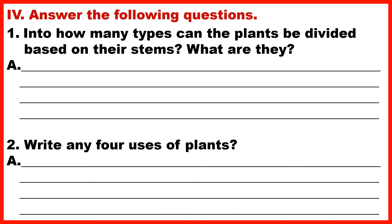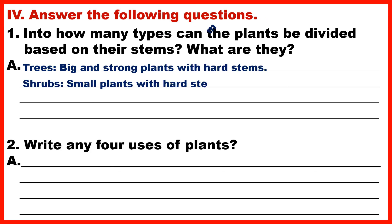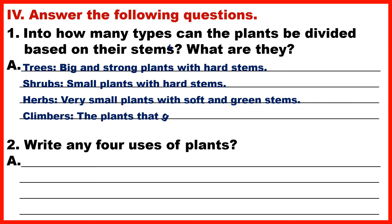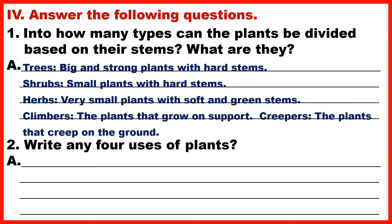Question 1: Into how many types can plants be divided based on their stems? Answer: Trees – big and strong plants with hard stems; Shrubs – small plants with hard stems; Herbs – very small plants with soft and green stems; Climbers – plants that grow on support; Creepers – plants that creep on the ground.